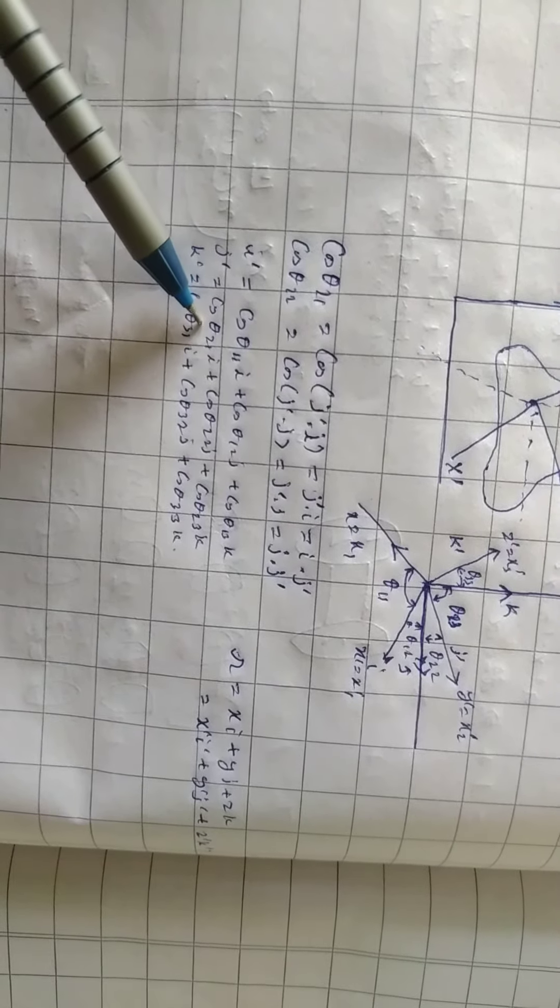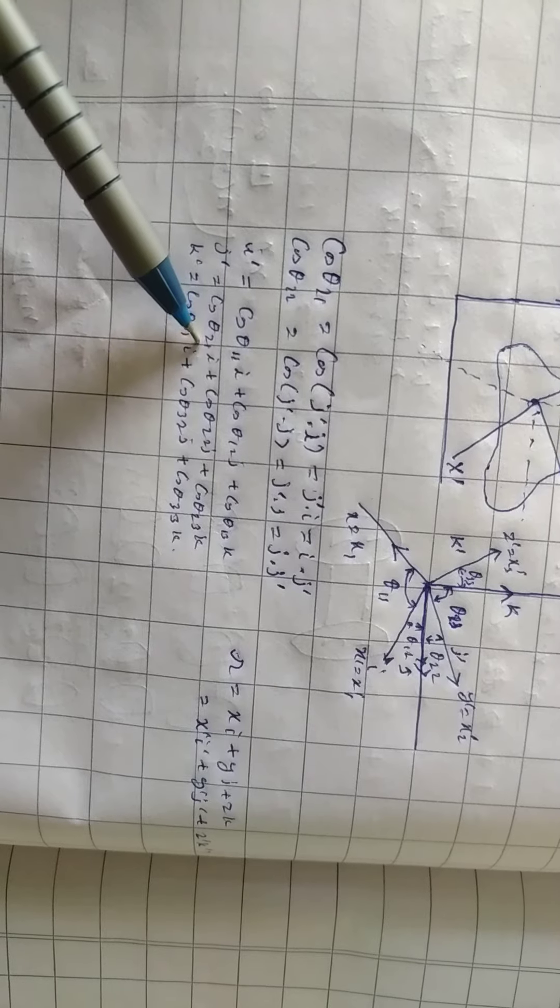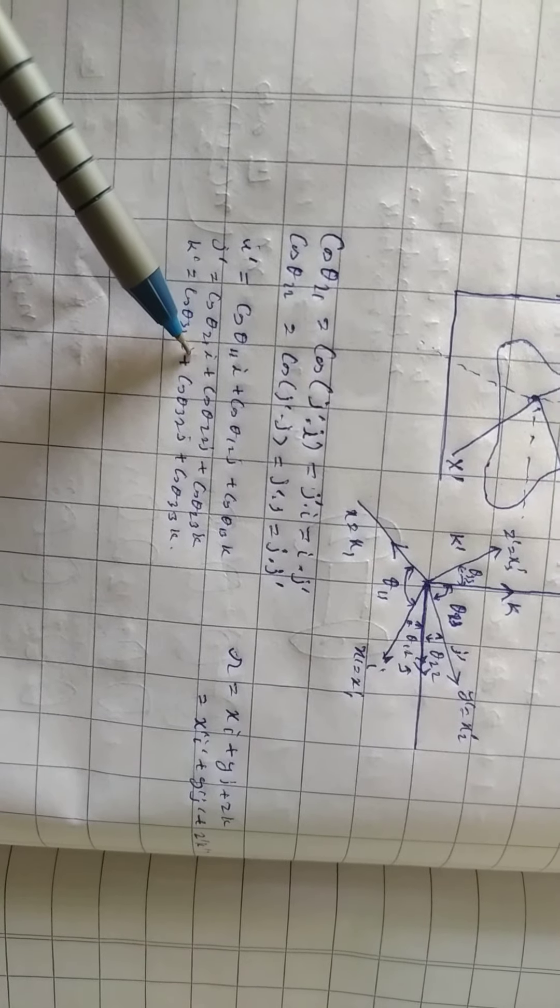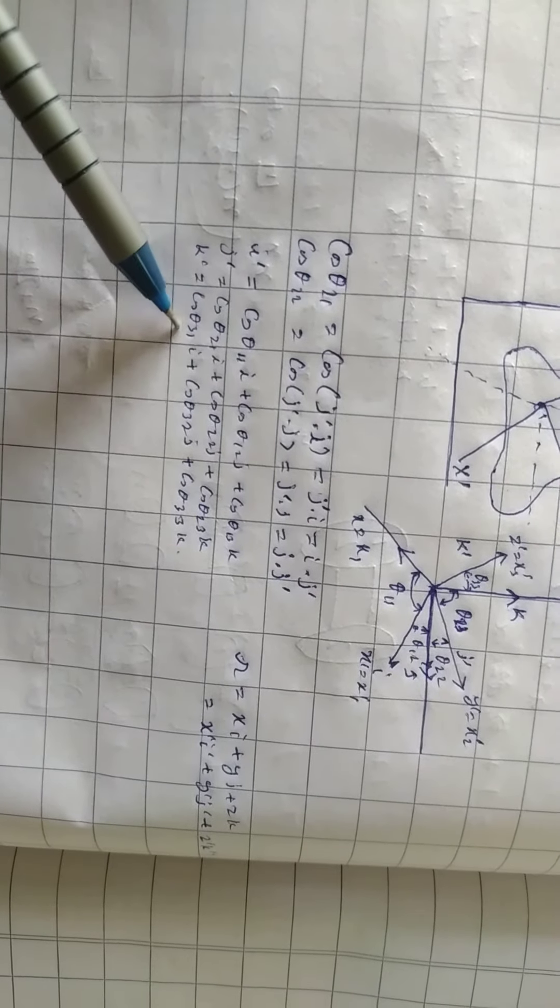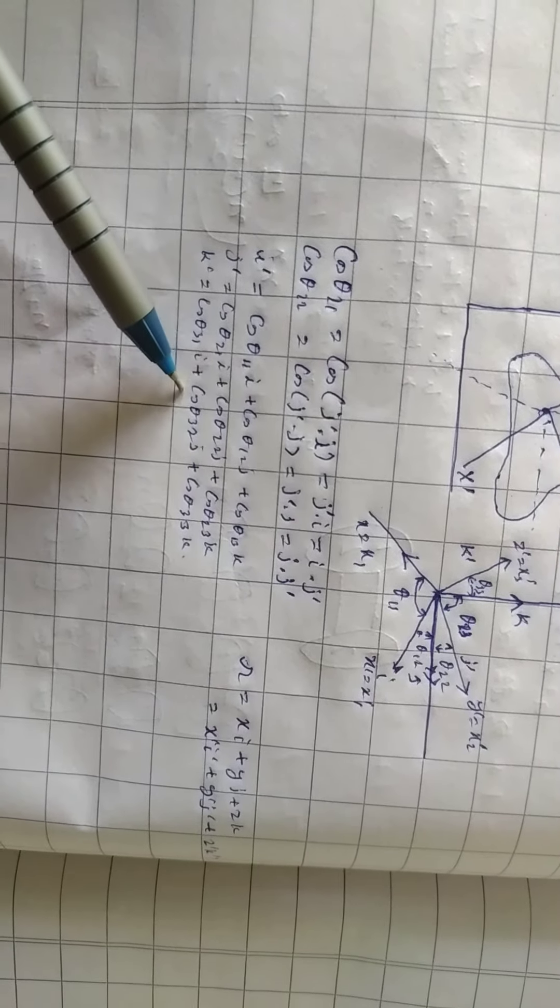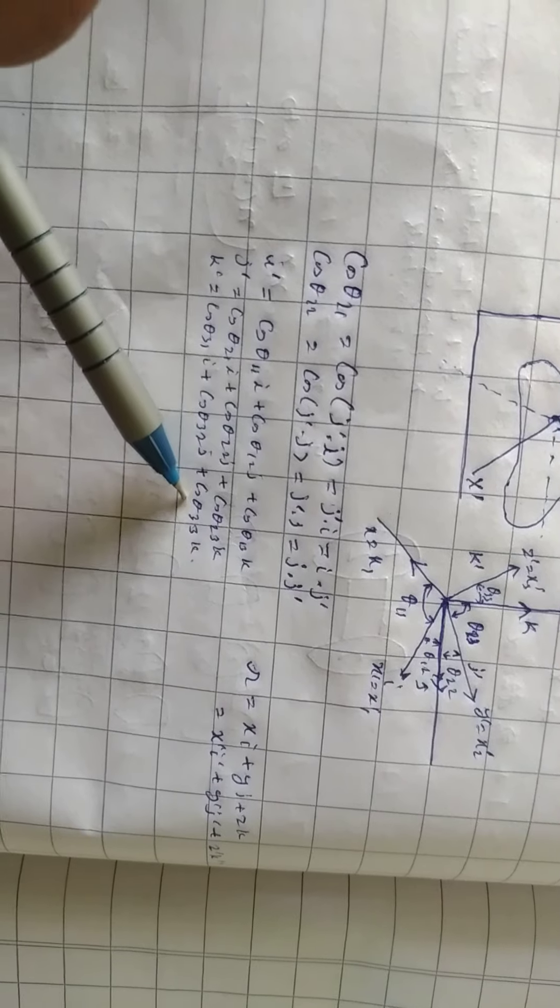k dash is equal to cos theta 21 i plus cos theta 32 j plus cos theta 33 k.